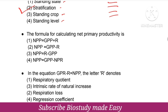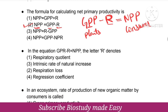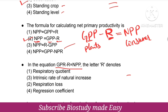The formula for calculating net primary productivity: GPP is gross primary productivity. NPP is net primary productivity. The formula is NPP = GPP minus R. In the equation GPP minus R equals NPP, the letter R denotes respiration loss.